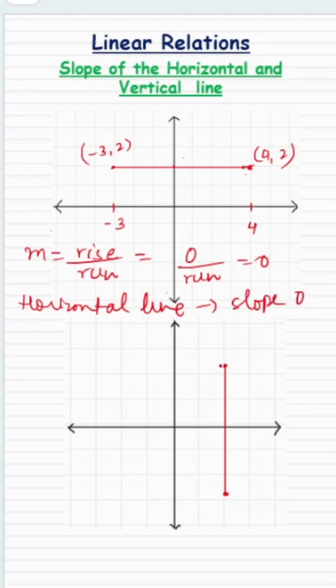For the vertical line, there is some increase in the value of y or you can say decrease in the y value. But what about run? Is the x value changing anywhere? No, x value stays the same.